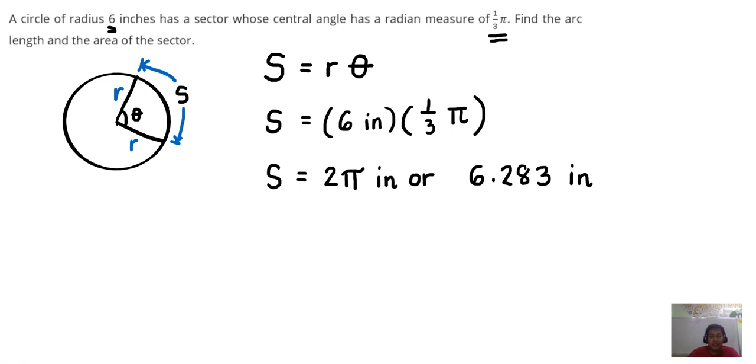And then the other question is we are going to find the area of the sector. When we say sector, this is actually this area, the area bounded by the two radii and the arc. So what is the area of the shaded portion?